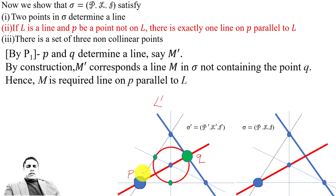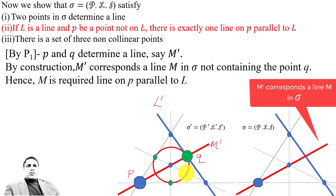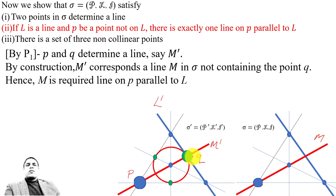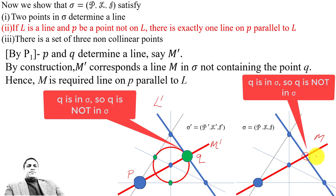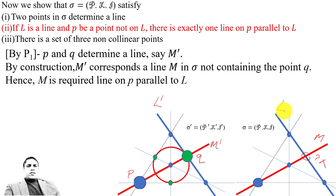ડીટમાય્મ ઓ લાય્ં — a line is determined. Line sigma-prime contains those points. For all lines in sigma-prime, there exists a corresponding line passing through point P. Therefore, for m-prime this also holds.